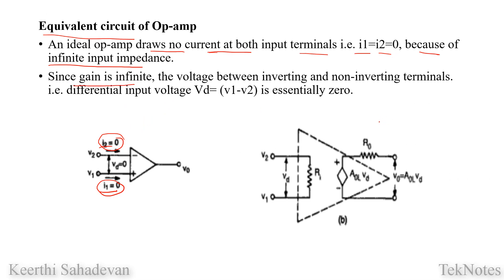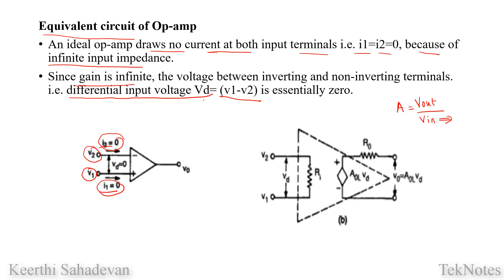In order to get the circuit, gain is the basic denominator. Vout is equal to Vin. Output voltage divided by input voltage ratio is gain. We can get the difference in input voltage. We use the non-inverting terminal. The input is V1 minus V2, which is the differential input voltage.